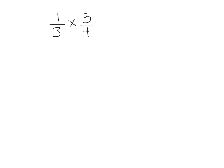We're going to take a look at another example of how to use a model to multiply proper fractions. Remember, whenever you see a multiplication symbol, that's the same thing as the word 'of.' So we're finding one third of three fourths.